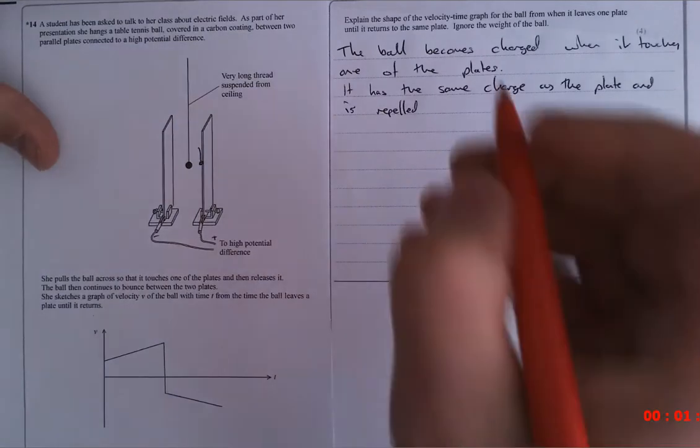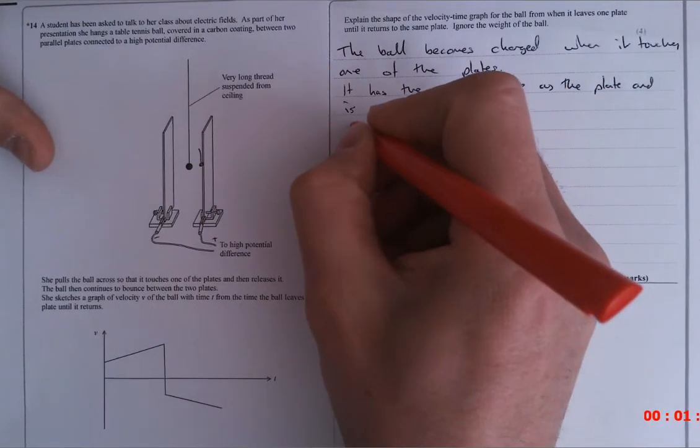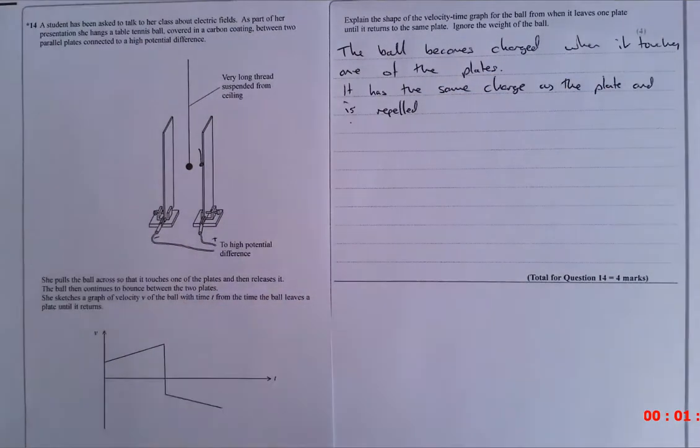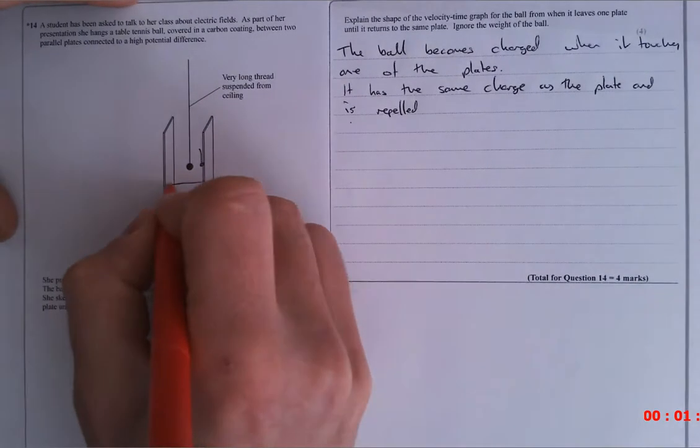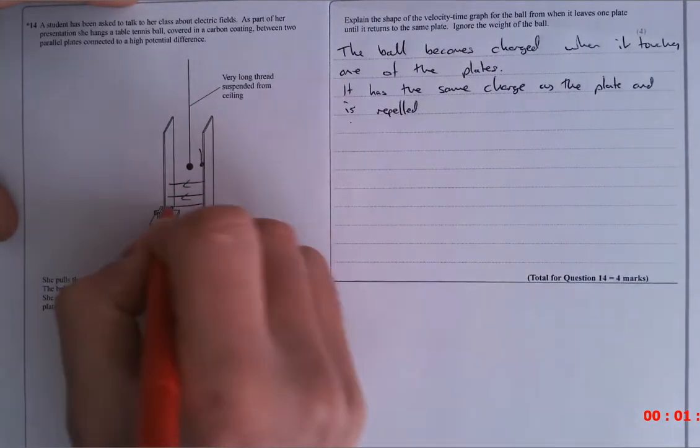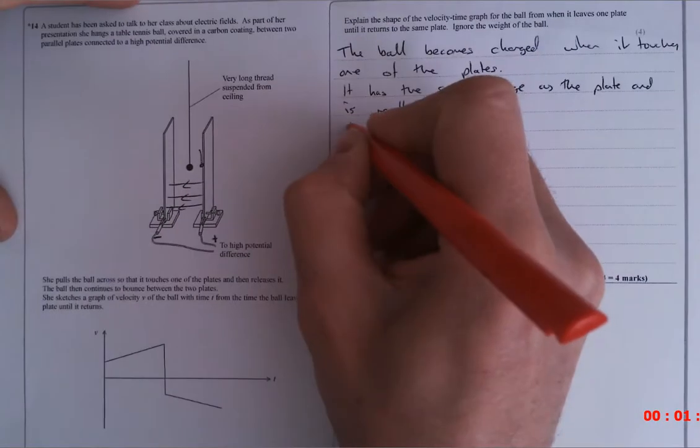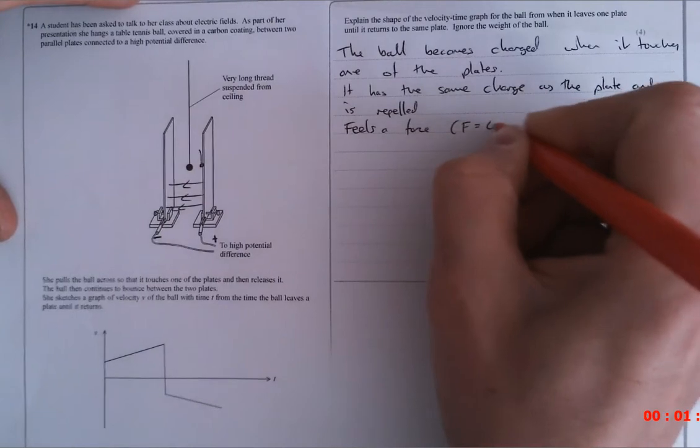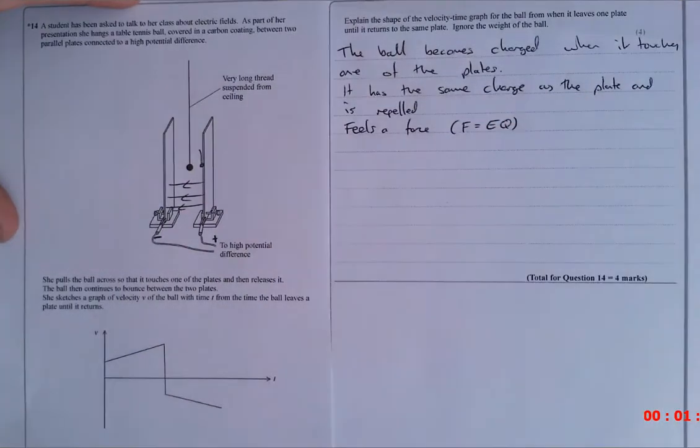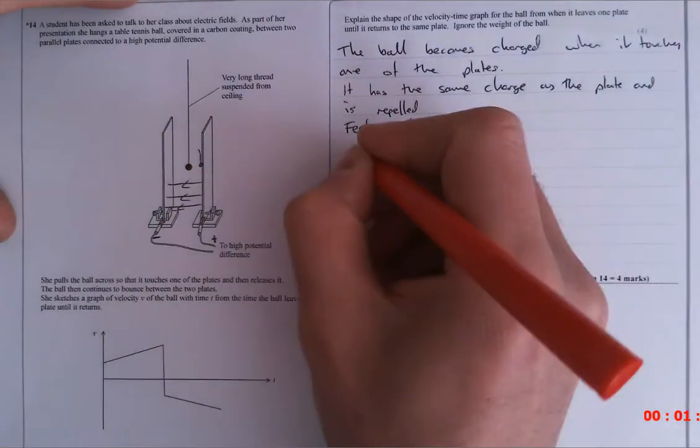So why is it going to be repelled? Well, it has a charge. It's in an electric field. So let's just for argument's sake, say it's positive and negative. So there is an electric field between the two plates, so that it feels a force. And the force is given by force is the electric field times by the charge. What happens when it feels a force?